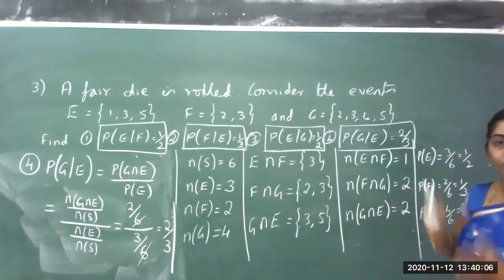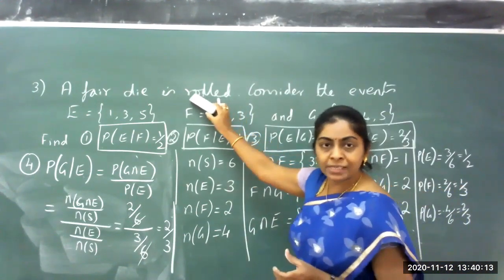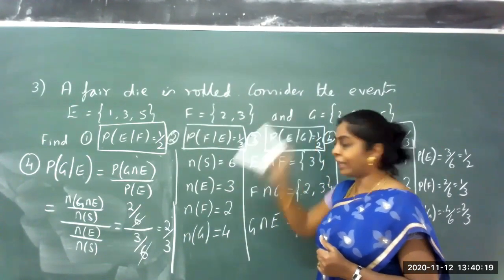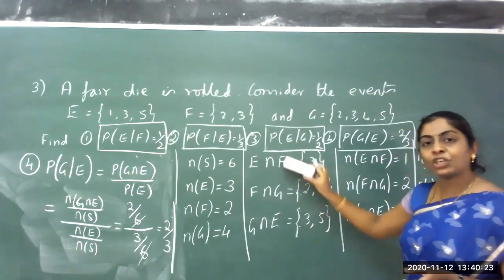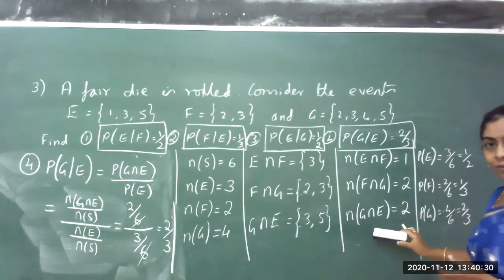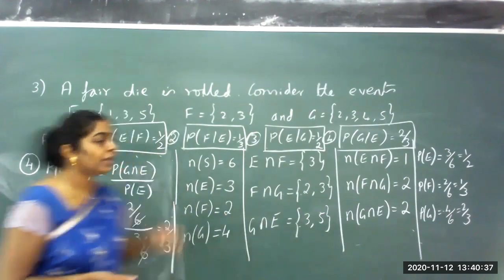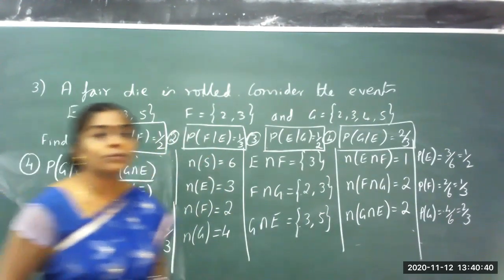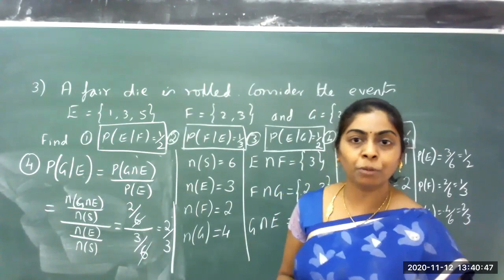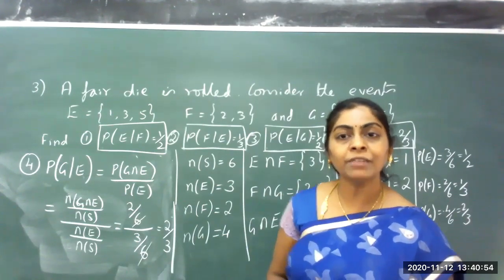So this is how we obtain conditional probability for the third problem. Whenever a problem is given, first write the sample space based on the experiment, note the number of elements. In this problem the events were already defined, so I wrote down the number of elements. Then find the intersection of each set — with 3 events there are 3 intersections. Then find individual probabilities using favorable outcomes divided by total sample space. Then apply the conditional probability formula for all four cases. These were the three problems on conditional probability in today's class. Next class we will continue further on conditional probability.